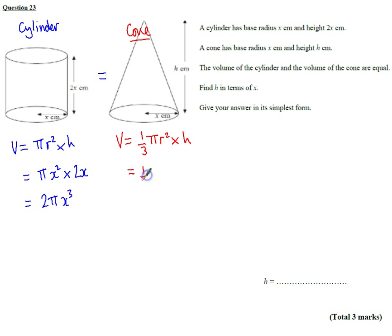So that's 1 third pi, the radius is the same, so it's x squared and the height in this case is just h. So we get 1 third pi h x squared.